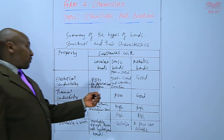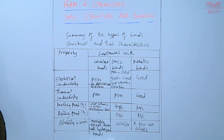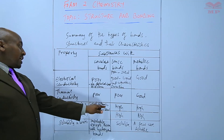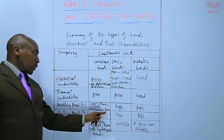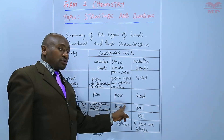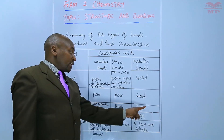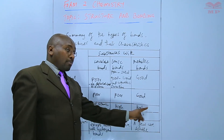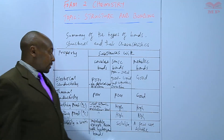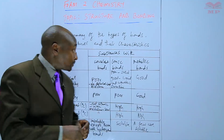Thermal conductivity of covalent bonds is poor, ionic is also poor, but for metals it is good. The melting point and boiling point of giant atomic covalent compounds is high, but molecular is low. For ionic compounds, they are high in terms of melting point and boiling point because of strong ionic bonds. Metals are the same due to strong metallic bonds. In terms of solubility in water, covalent compounds are insoluble, ionic compounds are mainly soluble, and for metals, only a few are soluble.